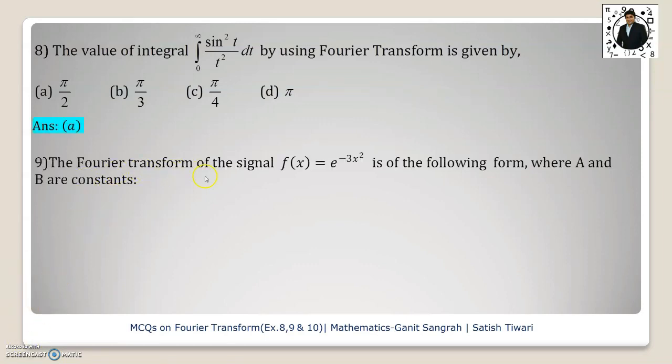Next question: The Fourier transform of the signal f(x) = e^(-3x²) is of the following form where A and B are constants. Four options are given to us.